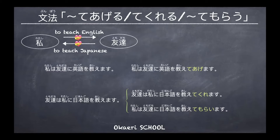The other way: the friend gives you a favor, or I receive a favor from the friend. Tomodachi is the subject. Using te-kureru: tomodachi wa watashi ni nihongo wo oshiete kureru, polite form kuremasu. Then with te-morau, the receiver becomes the subject, so watashi wa becomes the subject.